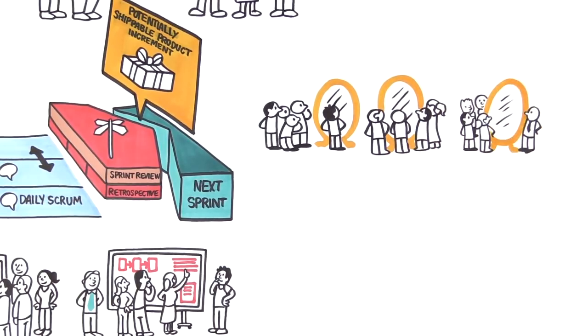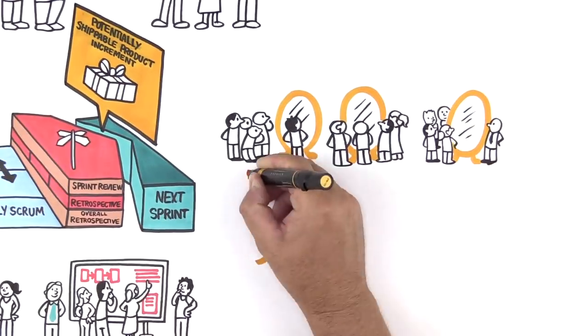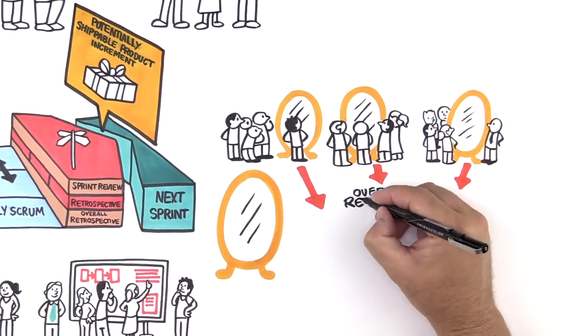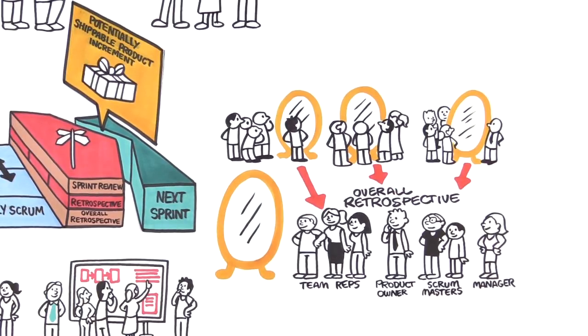And in LeSS, we don't stop with the team retrospectives. Teams, product owner, Scrum Masters, and management use the Overall Retrospective to explore the systemic and organizational obstacles that prevent higher value delivery. Use LeSS to inspect and adapt the entire organization.